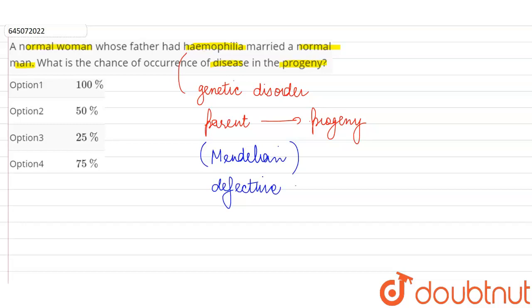And this gene is found on the X chromosome, so this is a sex-linked Mendelian disorder. Now if we talk about the mechanism of sex determination in human beings, we know we have chromosomal mechanism of sex determination.